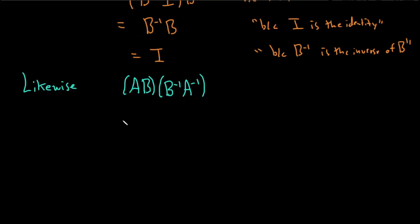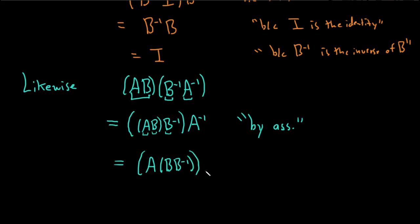So again, we'll start by using associativity. So this is equal to, so we're going to use it on these three pieces here. So we can write this as AB times B inverse and then times A inverse. And this is by associativity, so by associativity. Really nice. And then we're going to use associativity again on these three pieces here. So this will be A, times B, B inverse, times A inverse. And again, this is by associativity.